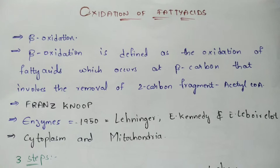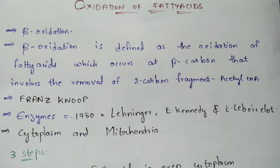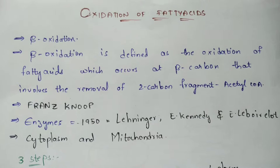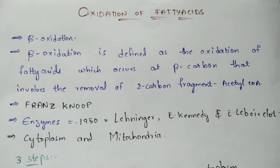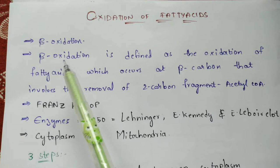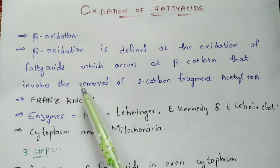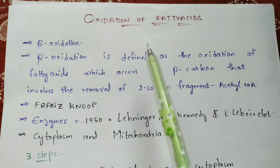Coming to the introduction part, what is meant by fatty acids? The structure of the fatty acid includes an alkyl chain, and if that alkyl chain consists of a carboxyl group, then it can be considered as a fatty acid. This oxidation of fatty acid can be explained by beta oxidation, which is defined as the oxidation of fatty acid that occurs at the beta carbon, involves the removal of two carbon fragments — the two carbon fragment being acetyl-CoA.